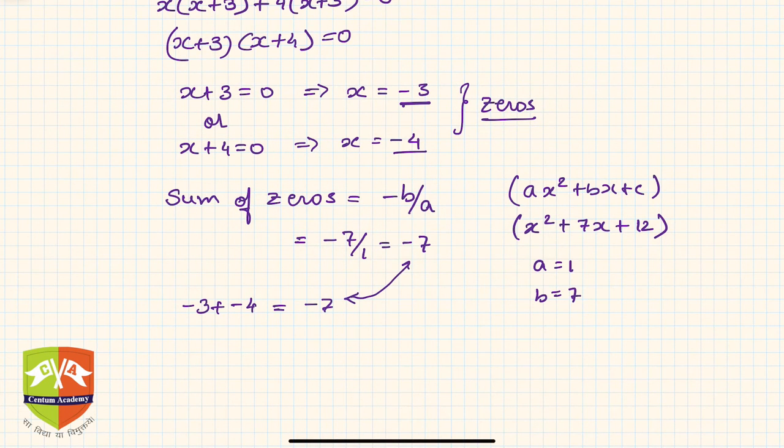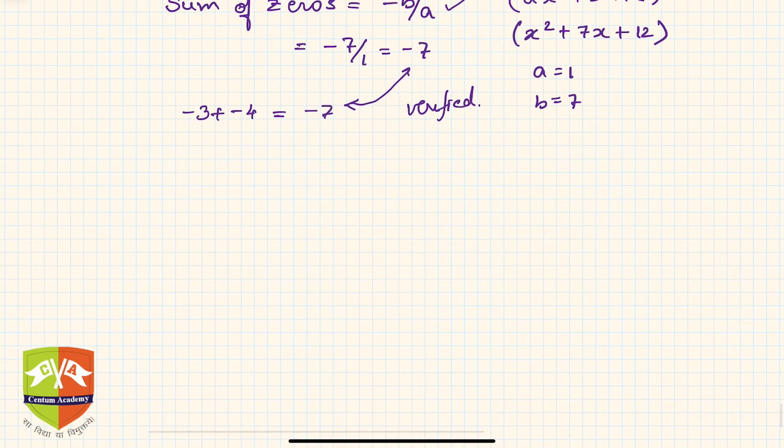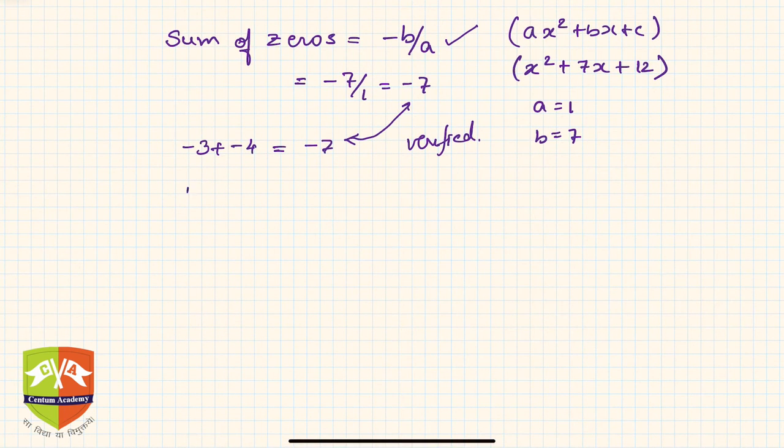Product of zeros for a quadratic polynomial is given by c/a. Here, c is clearly 12, so c/a = 12/1 = 12. The product of zeros: (-3) × (-4) = 12.